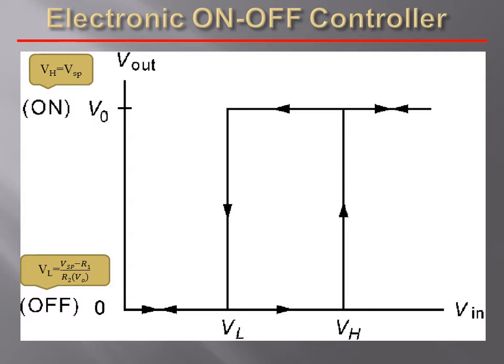The characteristic of on-off controller shows the relationship between input and output voltages of the circuit. This characteristic indicates that there are only two states of the output voltage, i.e. 0V and V0. The neutral zone can be adjusted by varying the value of the resistor R2, and the neutral zone is in between VL and Vh.